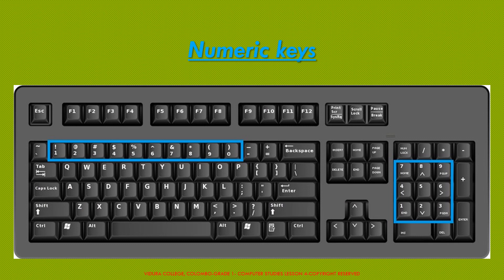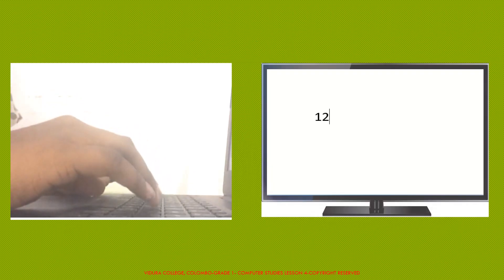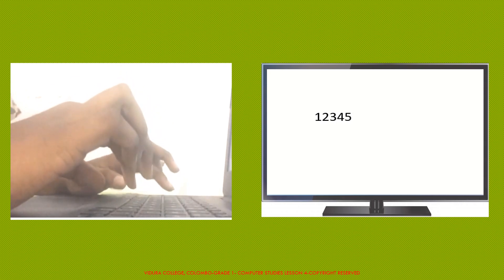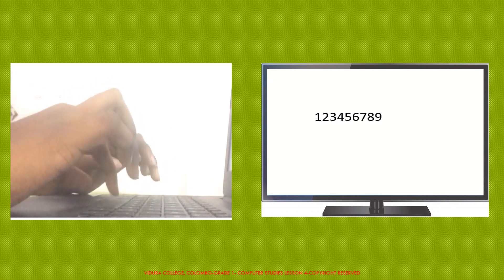Numeric keys are also called number keys. The keys that have numbers printed over them on the keyboard are called number keys. You can type any number using these keys. These numeric keys are present on the top row above the alphabet keys, and also another set is on the right of the keyboard. When you type a number, it appears on the monitor screen.